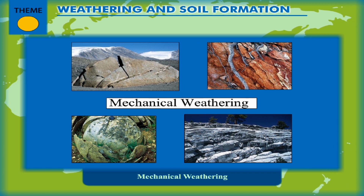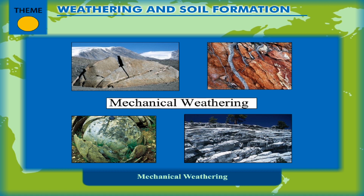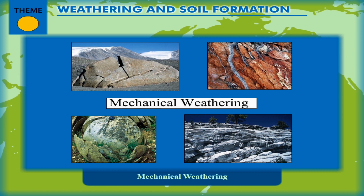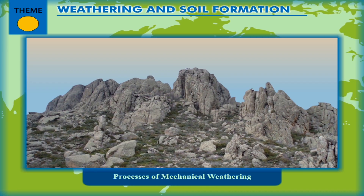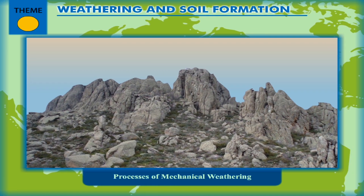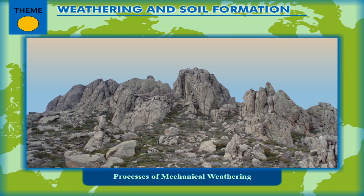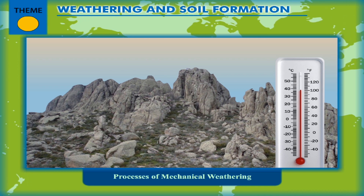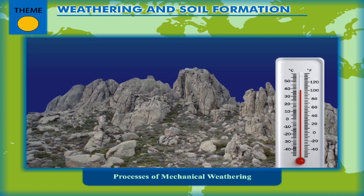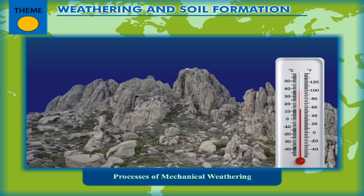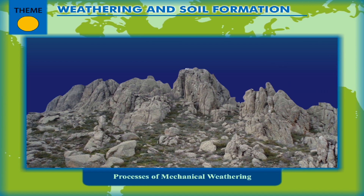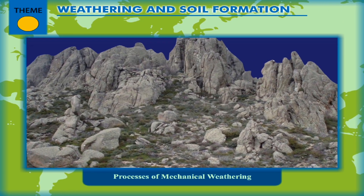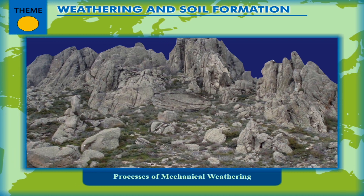Mechanical Weathering involves the disintegration or breaking up of the rocks. There is a change in the physical property of the rocks but no chemical changes take place. The rocks are composed of minerals which have different rates of heating and cooling. During the day, the temperatures are high and expansion of rocks takes place. During the night, the temperatures fall and contraction of the rocks takes place. As the rate of expansion and contraction of the minerals of which a rock is composed is different at various temperatures, the rocks break up into blocks or as grains depending on the rock structure.